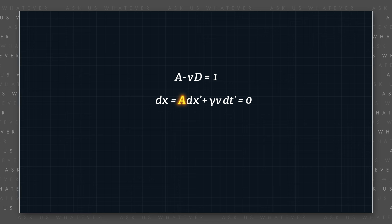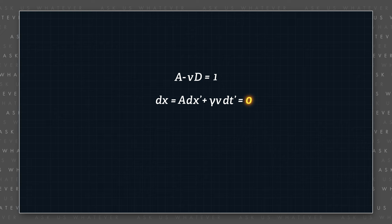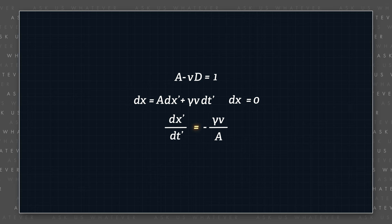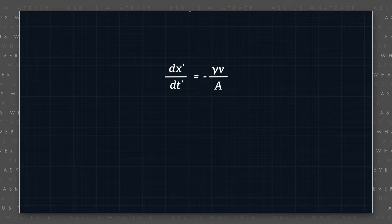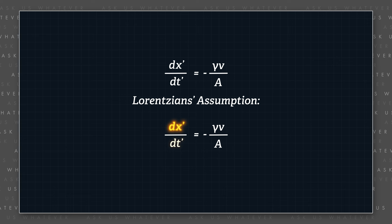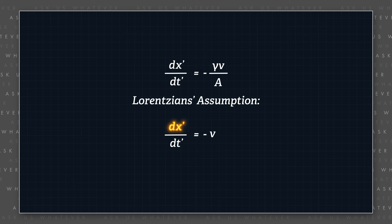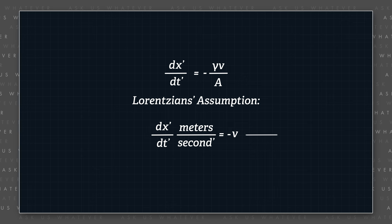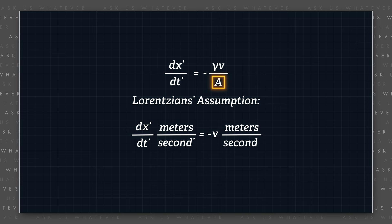We need to solve for capital A and capital D. Let's look at conditions where dx equals zero, such that the dx transformation becomes capital A times dx prime plus gamma times V times dt prime equals zero. This can be rearranged to solve for dx prime dt prime, which equals negative gamma times V divided by A. Now recall from episode 7.1 that this is where the Lorentzians make the assumption that dx prime dt prime must equal negative V, without addressing the concern that dx prime dt prime is measured in meters per second prime and V is measured in meters per second. Their approach requires capital A to be a dimensionless conversion factor relating distance traveled between the two frames, which in the classical world would be a function of gamma squared, not gamma.